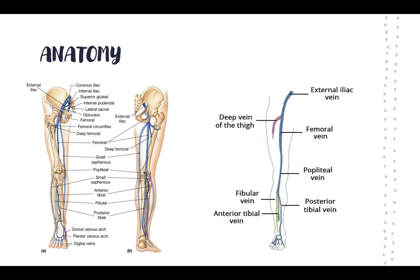It's important to understand our venous anatomy. We have the deep venous system and the superficial system with our saphenous veins. Starting from the common iliac vein, it splits into internal and external iliac veins. Tracing the external iliac, we get the femoral vein, which gives off the deep femoral — the profunda femoris. The femoral vein then becomes the popliteal vein, which gives off an anterior tibial branch, and the remainder splits into the peroneal vein and posterior tibial vein.